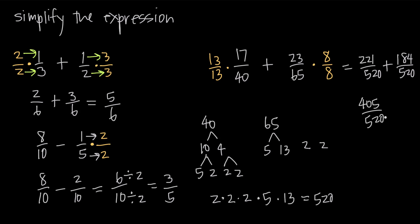Now we just need to make sure our fraction is in lowest terms. We can see right away that both 405 and 520 are going to be divisible by 5. So if we divide 405 by 5, we get 81, and if we divide 520 by 5, we get 104. Since 81 and 104 don't have any common factor other than 1, we know our fraction is in lowest terms, and that'll be our final answer.